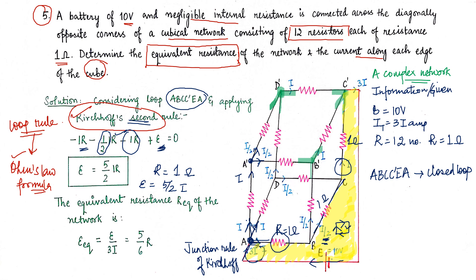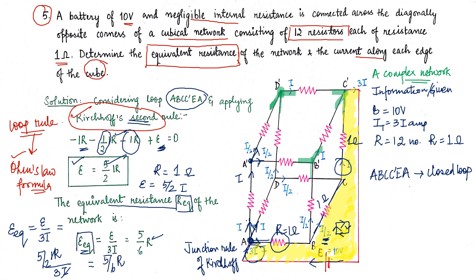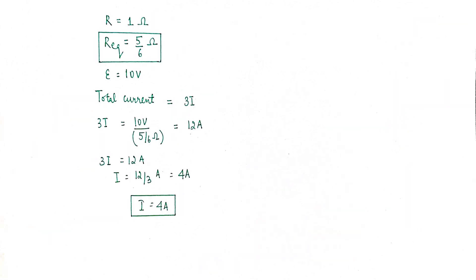The equivalent resistance R_eq of the network is found by dividing the EMF by the total current: R_eq = E / (3i) = (5iR/2) / (3i). The i cancels, giving R_eq = 5R/6. Substituting R = 1 ohm, the equivalent resistance equals 5/6 ohm.